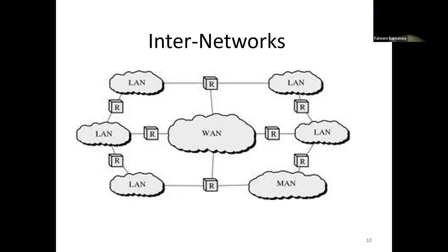From here to Australia, a message travels from one router to the next through neighboring networks. You can think of routers as airports: if you're traveling from Dublin to Istanbul, you might go through London, Paris, or Rome. Routers work the same way — each one forwards your data to the next, and you pick whichever route is available to reach the final destination.